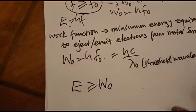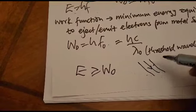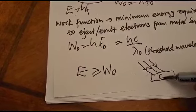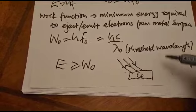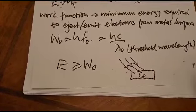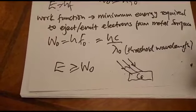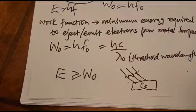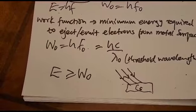If light is shone onto a metal and no electron is ejected, this means the energy of a photon of that radiation is less than the work function, hence no electron is ejected. Also, if the photon energy is equal to the work function, electrons will be ejected but they will not be able to move, because there is no remaining energy to give those electrons motion.